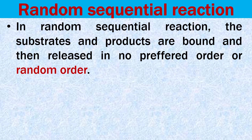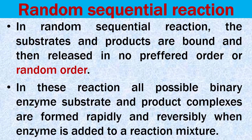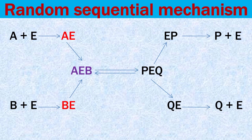In random sequential reactions, substrates and products are bound and released in no preferred or defined order. Unlike ordered sequential reactions where binding of substrates and release of products follow a defined order, in random sequential reactions there is no definite order for binding of substrates or release of products. All possible binary enzyme-substrate and product complexes are formed rapidly and reversibly when enzyme is added to the reaction mixture.